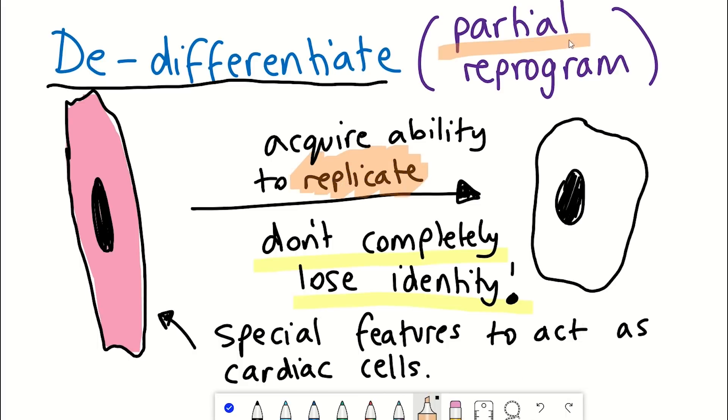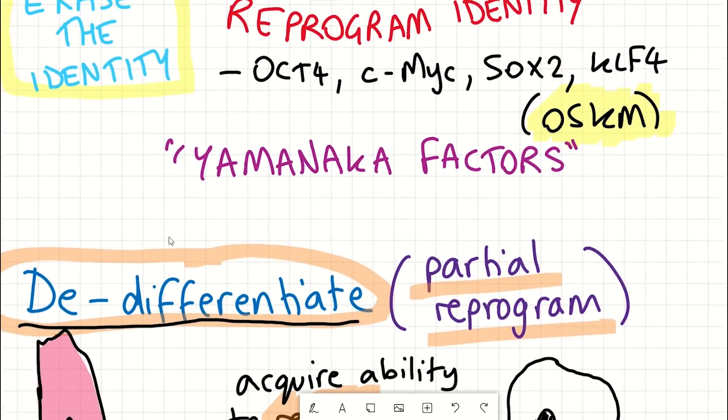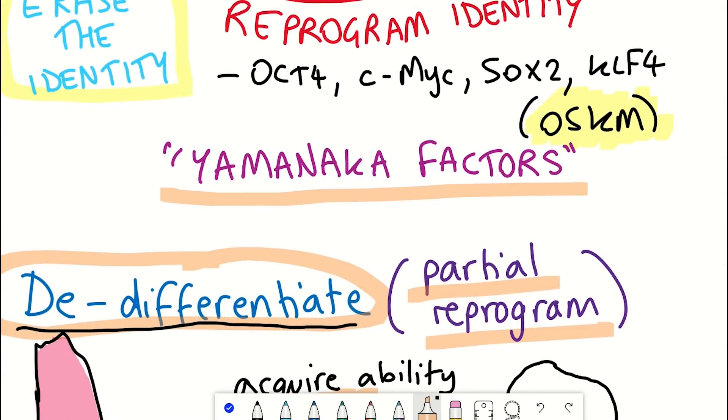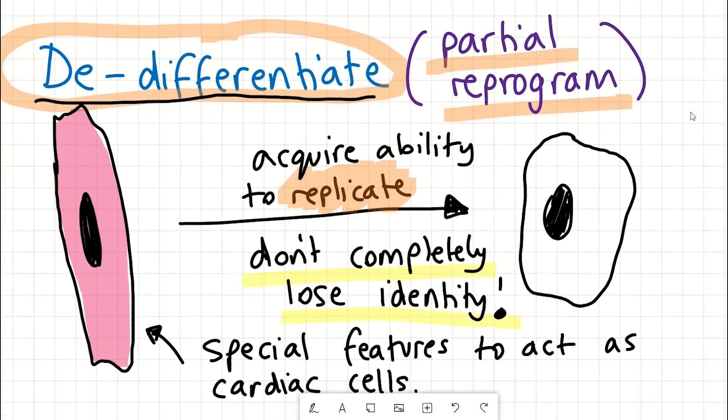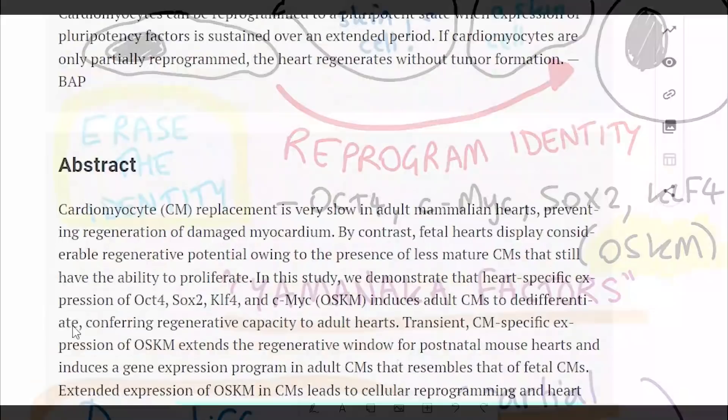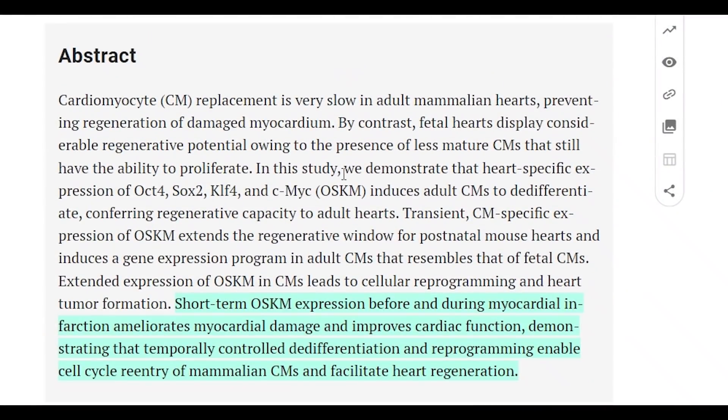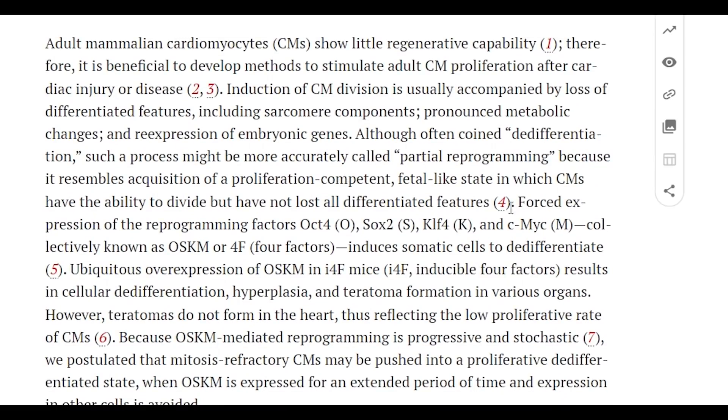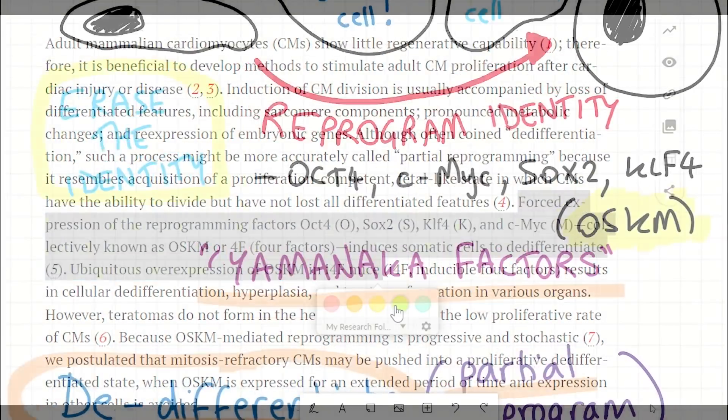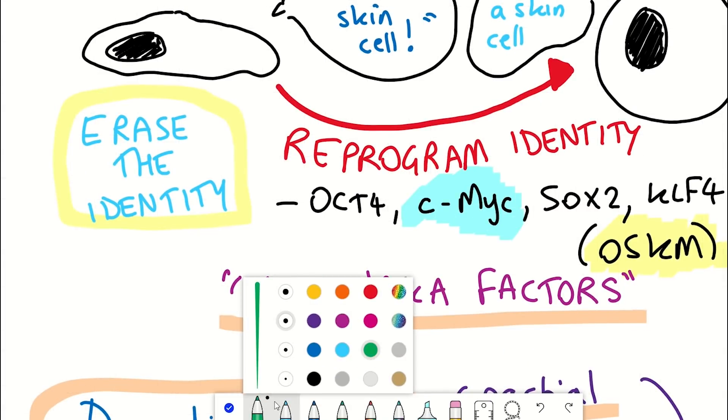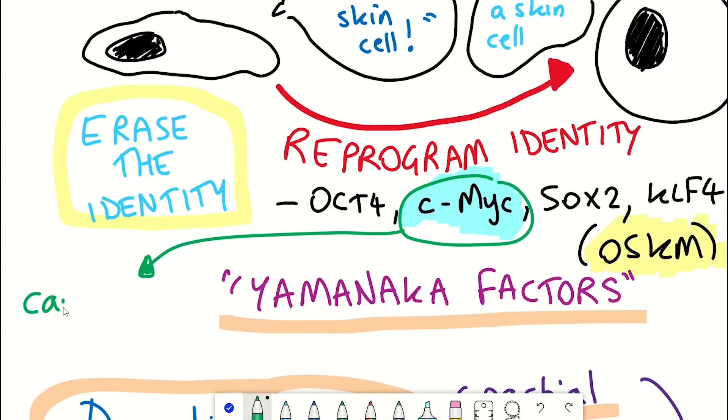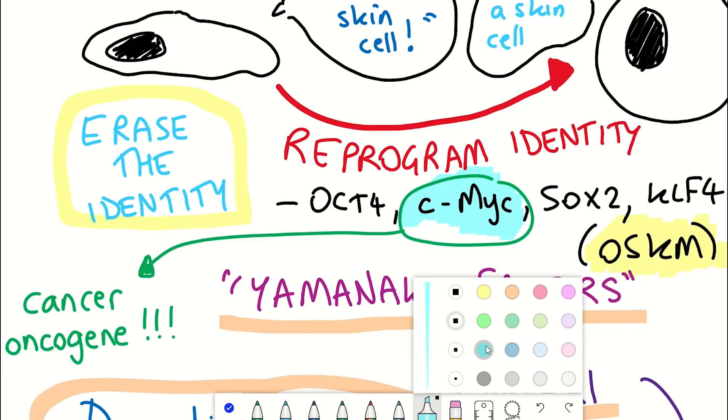So would it be possible therefore to regenerate the heart? Could these Yamanaka factors be used to replace or reform new cardiomyocytes? Well this nicely leads us back to this recent research paper that tried to further explore this. So what they needed to achieve was to get these heart cells, these cardiomyocytes, to replicate by entering mitosis. Due to much published data so far on the Yamanaka factors, this seemed like a logical approach to follow. Though they were also interested in testing whether reprogramming would work without c-MYC since this factor is a cancer oncogene. In other words, in some cancers, this protein is overactive. So this would just leave OSK.